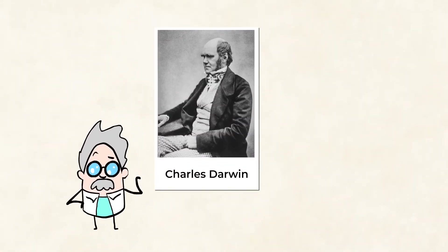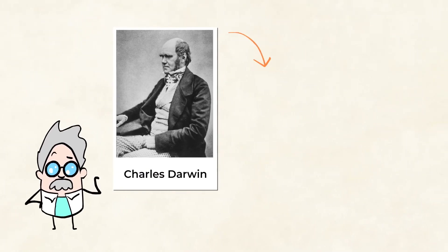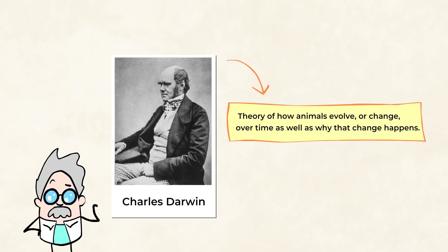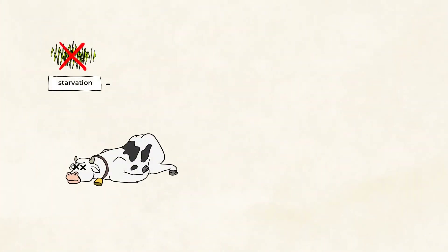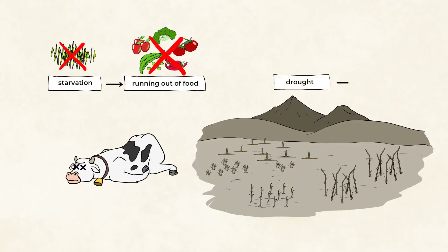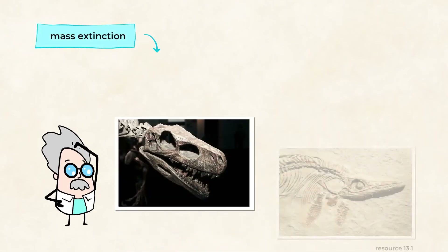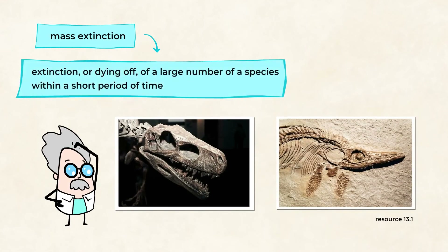A scientist named Charles Darwin started the study on how all this works. It is the theory of how animals evolve, or change over time, as well as why that change happens. Seeing as we all have a common ancestor — thanks to fossils showing us that — all organisms have evolved to be what they are today. That also means that some animals were unable to survive the journey to today's world. They experienced things like starvation, drought, and even mass extinction events like the one the dinosaurs experienced. A mass extinction event is the extinction, or dying off, of a large number of species within a short period of time.